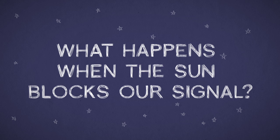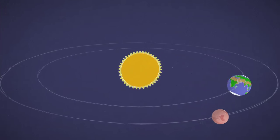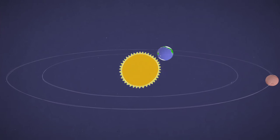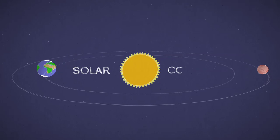What happens when the Sun blocks our signal? About every two years, Earth and Mars wind up on opposite sides of the Sun. That's called solar conjunction.